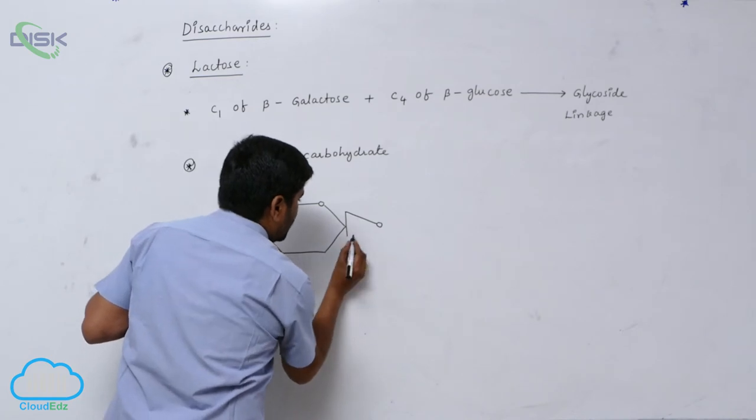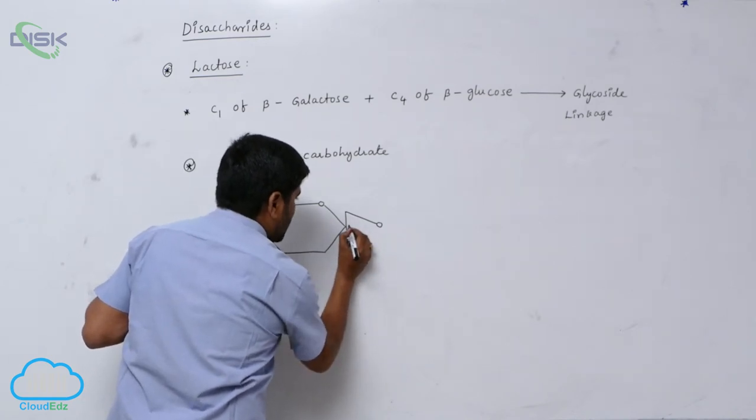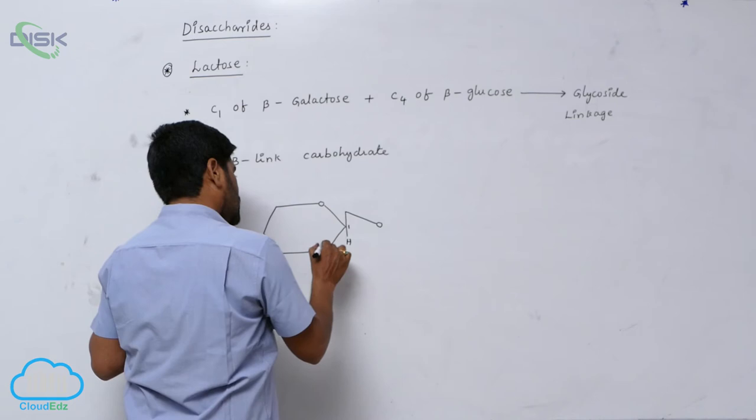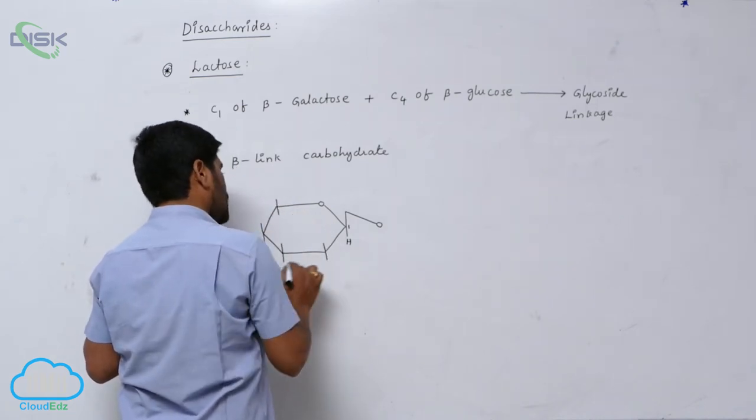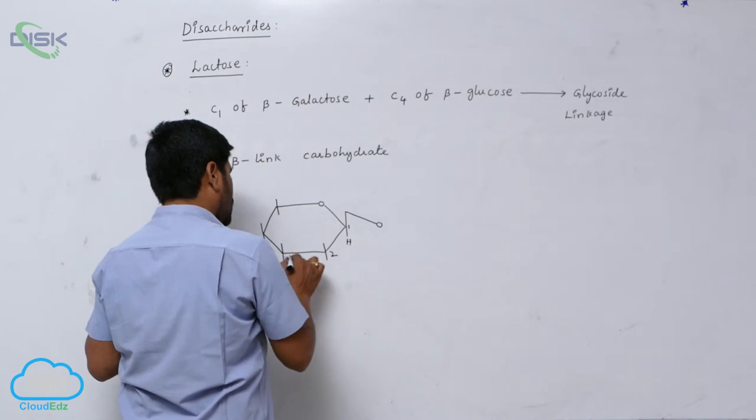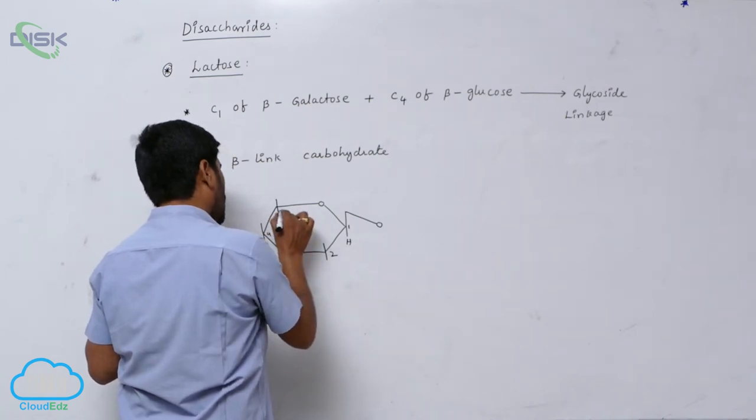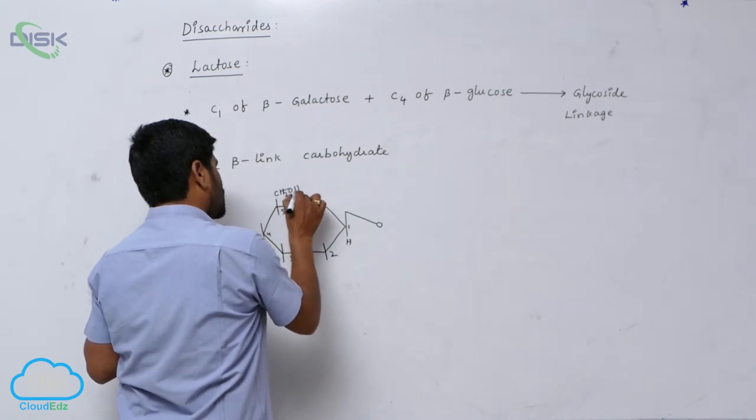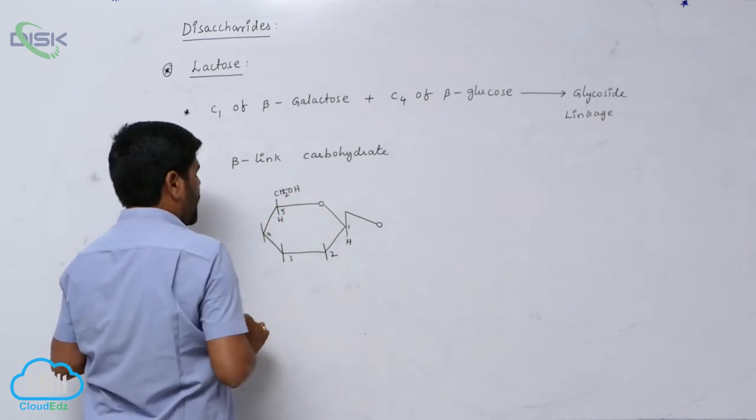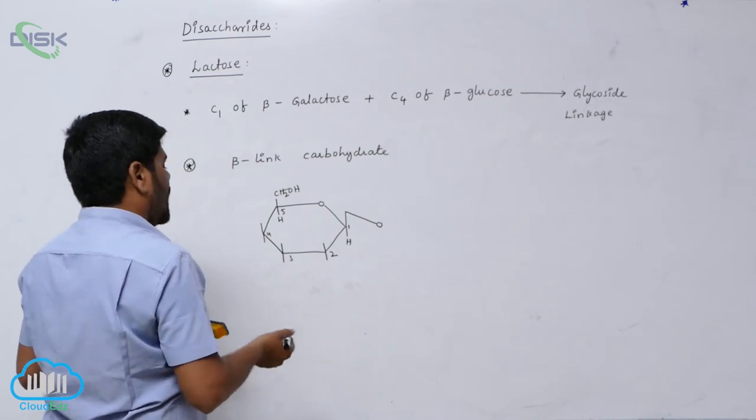Oxygen here is H. This is C1 carbon, C1, C2, C3, C4, C5, CH2OH, hydrogen. Actually in galactose.